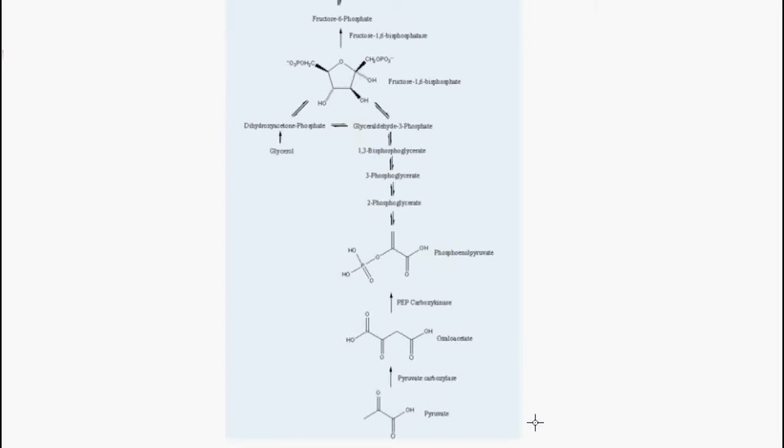Now today we're going to discuss the gluconeogenesis pathway from pyruvate. So pyruvate is converted into oxaloacetate using the enzyme pyruvate carboxylase. This enzyme requires a coenzyme known as biotin to function. When there's an environment of high ATP hydrolysis,